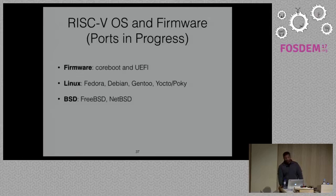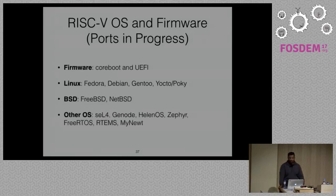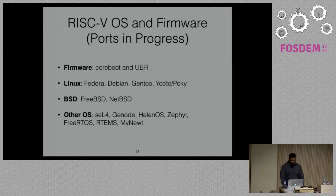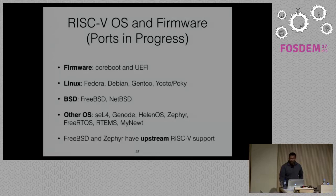NetBSD has a port in progress. There are a number of other operating systems with RISC-V ports in progress, tending to be more embedded: seL4, Genode, HelenOS, Zephyr, FreeRTOS, RTEMS, and Minix. The software stack is getting there steadily. The most exciting thing is that FreeBSD 11.0 and the Zephyr kernel from the Linux Foundation both have upstream RISC-V support.